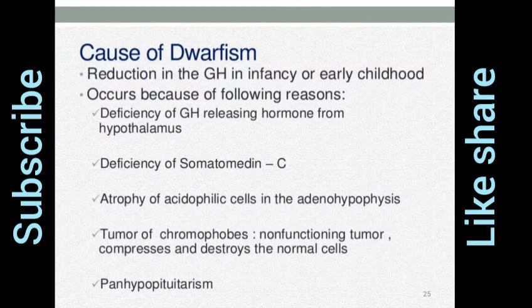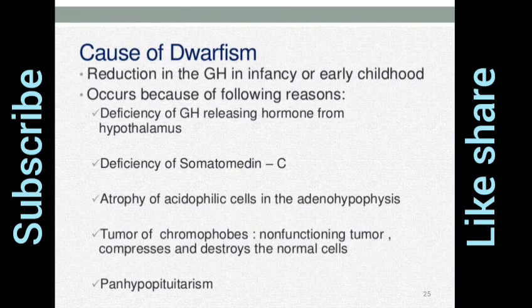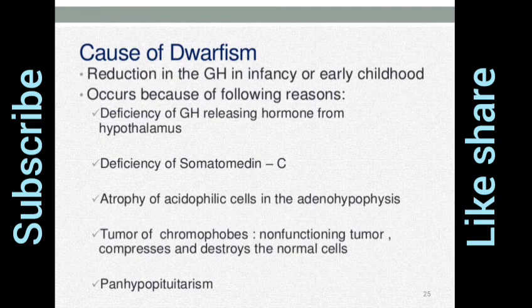Causes of Dwarfism: reduction in GH in infancy or early childhood occurs because of the following reasons — deficiency of GH releasing hormone from the hypothalamus, deficiency of somatomedin C, atrophy of acidophilic cells in the adenohypophysis, and tumor of chromophobes, a non-functioning tumor that compresses and destroys the normal cells.